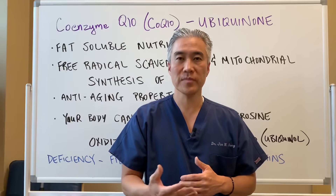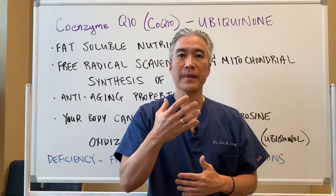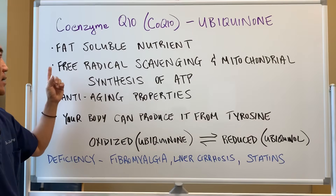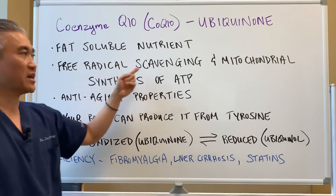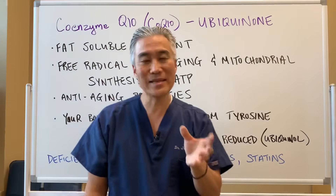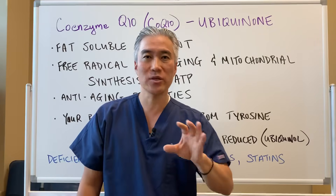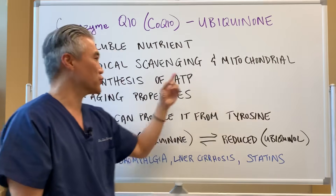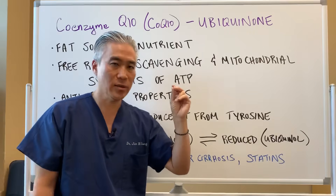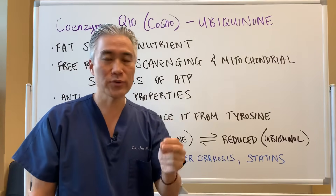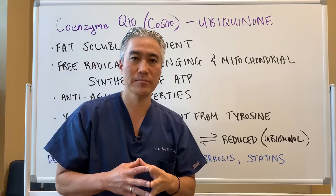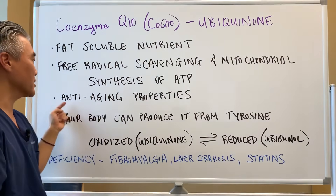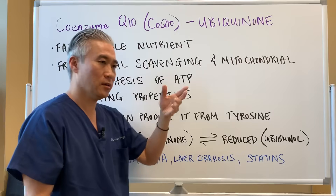What is it? What does it do? And how much should we take? Basically, it's a fat-soluble nutrient, and it's important for free radical scavenging — what that means is that it cleans things up: cellular debris, damage, etc. So it's an important antioxidant. And it's important for mitochondrial synthesis of ATP — it uses it to produce energy of the cell. So if you can clean things up and have more energy, basically it has anti-aging properties.